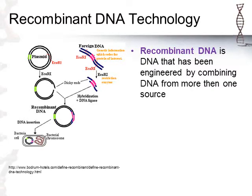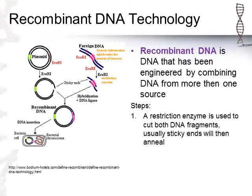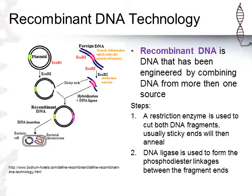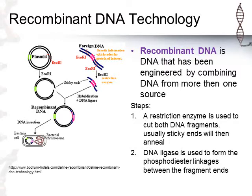To recap: DNA comes from more than one source — that's why it's recombinant. We cut out the gene of interest using restriction enzymes and put them in a situation where some portion of the gene of interest will anneal to the sticky ends of the plasmid. Ligase can also be used to re-stick the phosphodiester linkages.